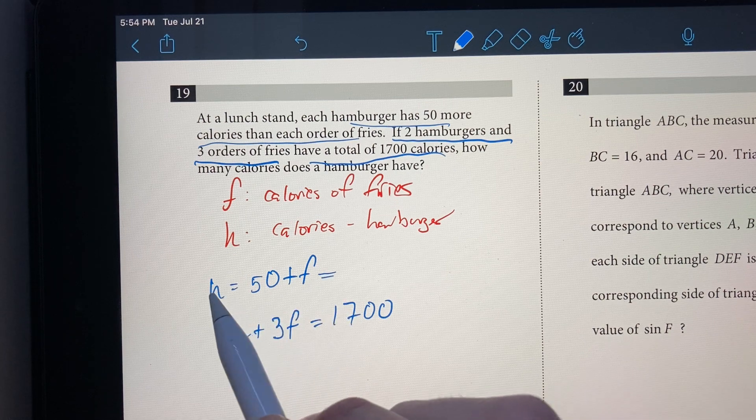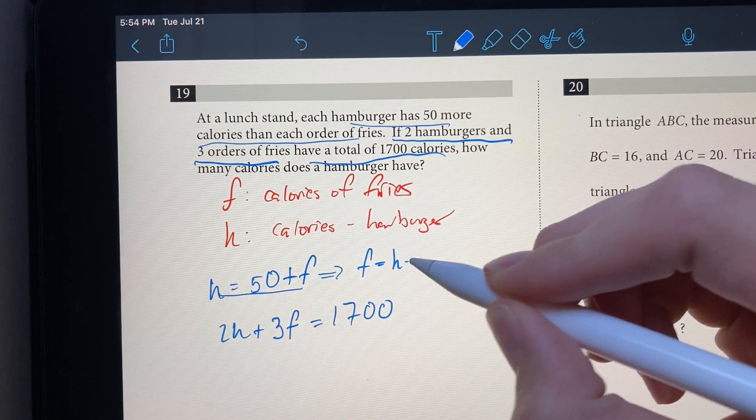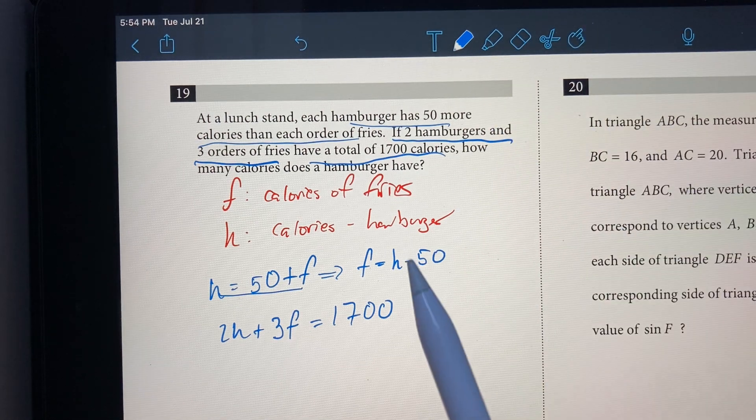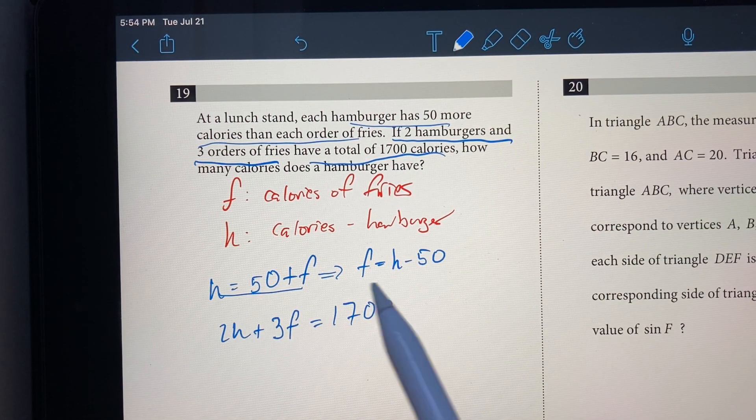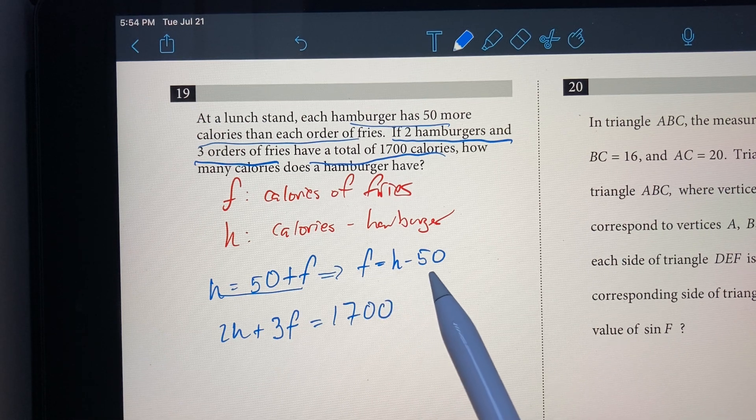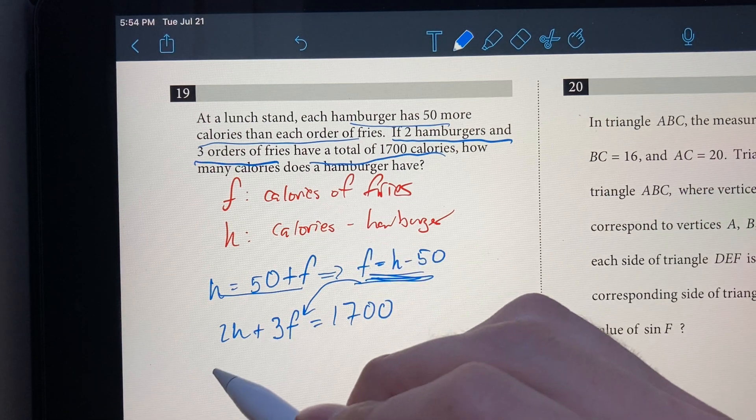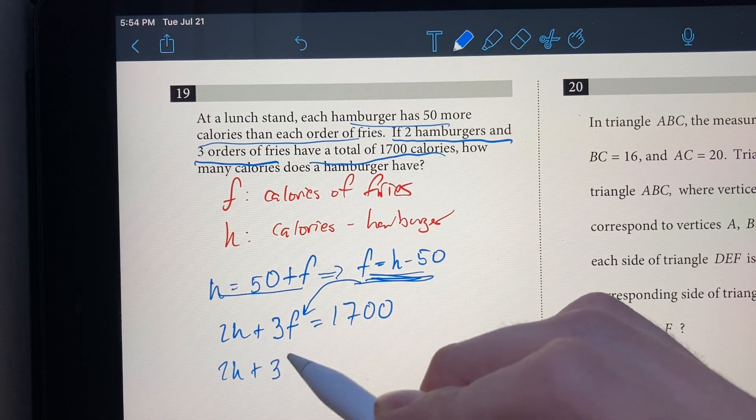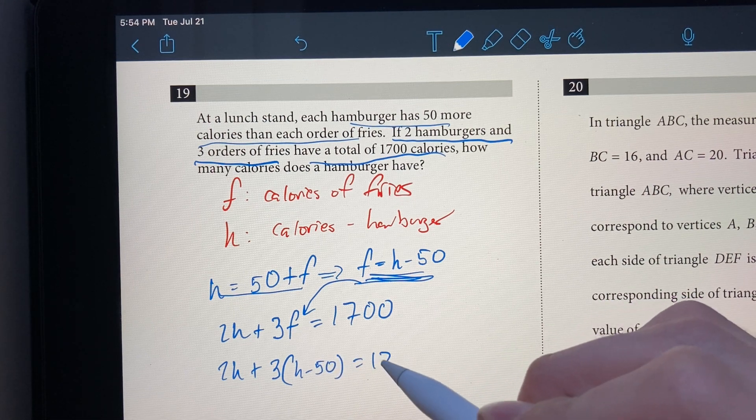I'm going to rewrite this first equation as F equals H minus 50. It's the same equation, I just subtracted 50 from both sides. So now I'm going to plug this into this equation. I have 2H plus 3 times H minus 50 is equal to 1,700.